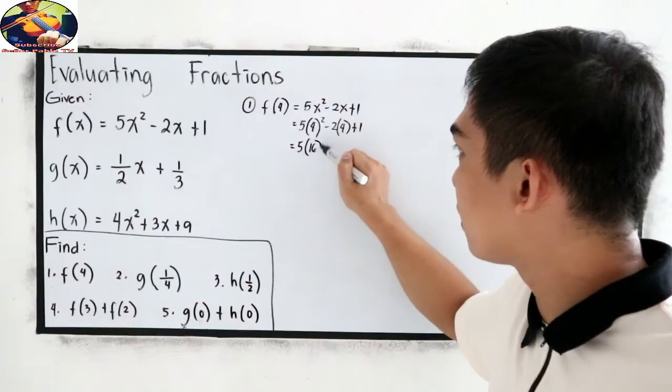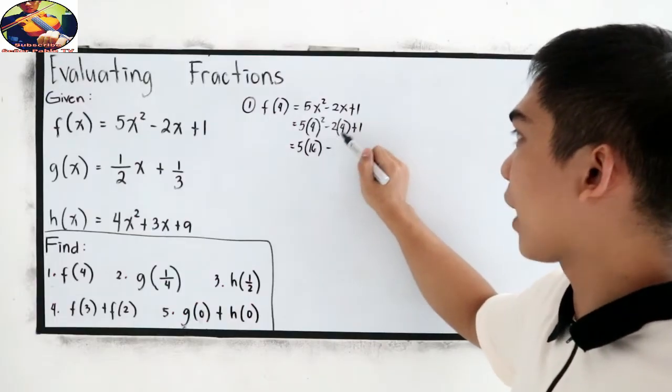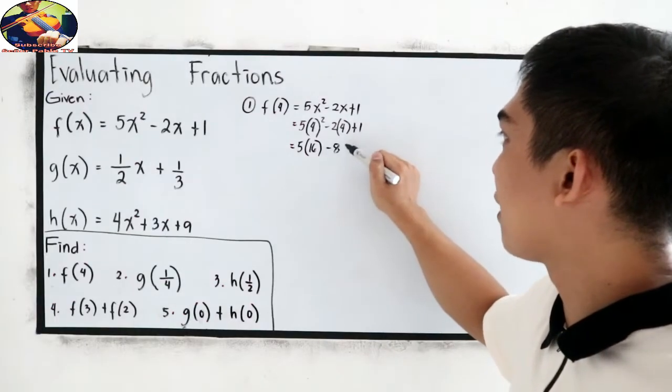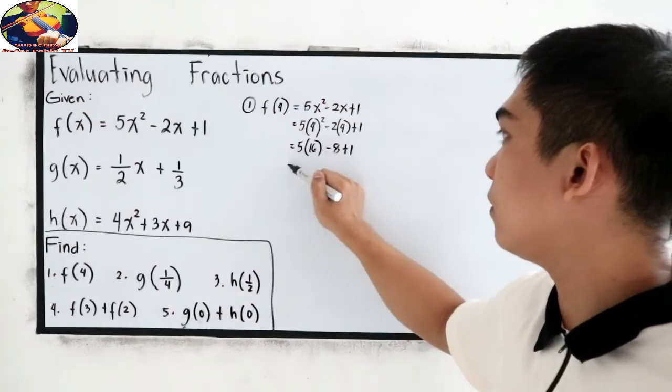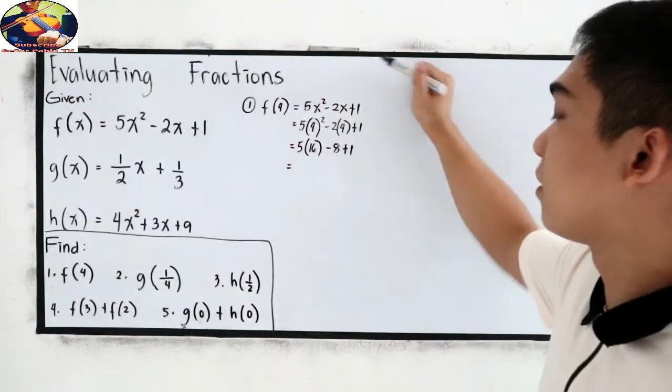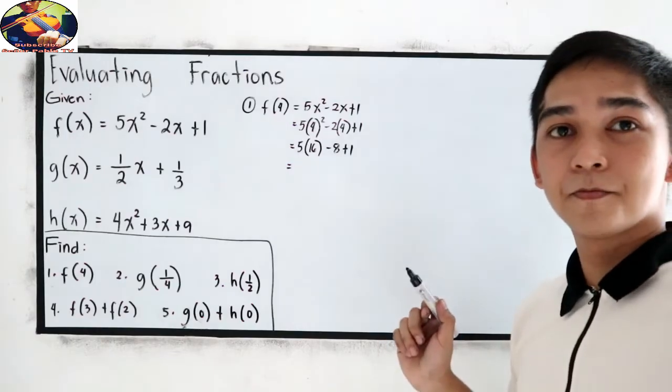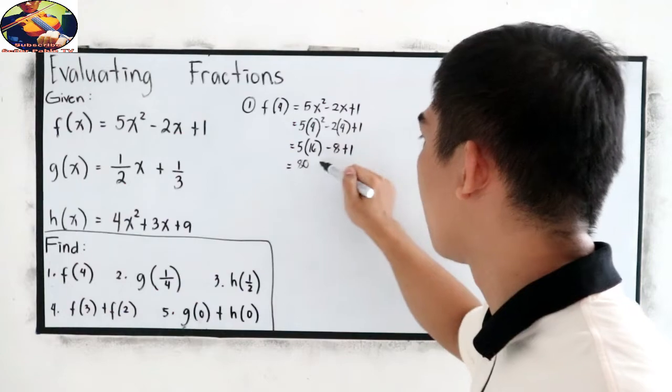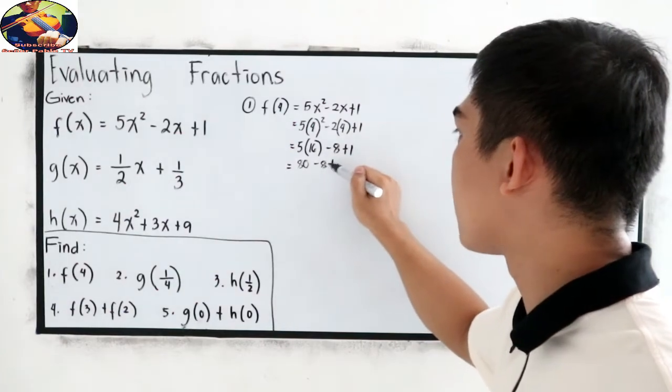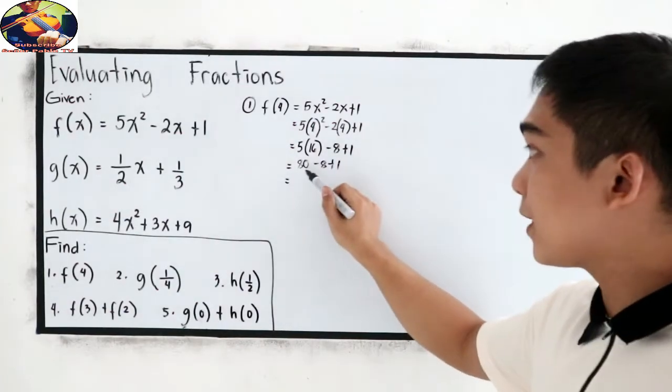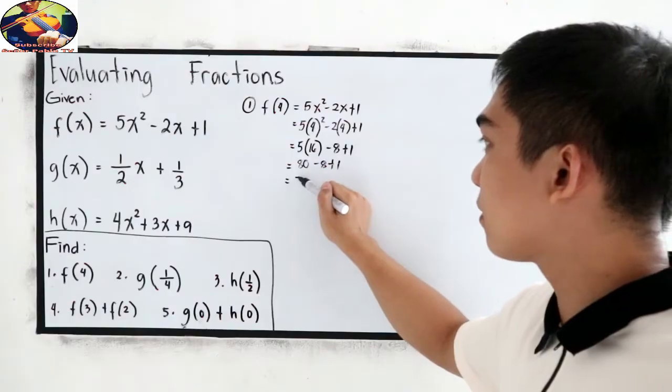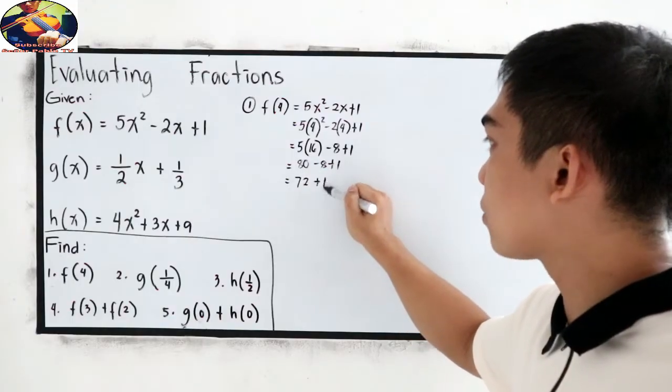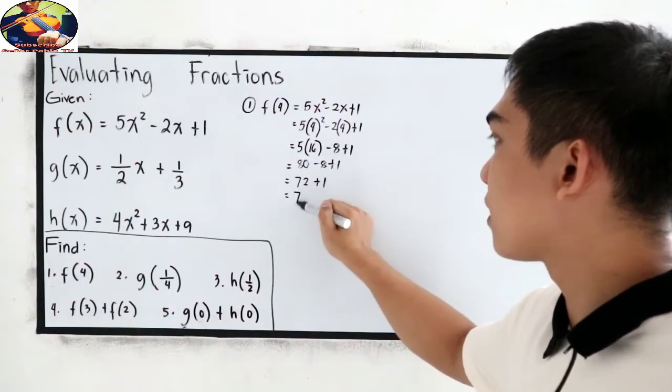5 times 4 squared, this is 16, minus 2 times 4, which is 8 plus 1. 5 times 16, so that is 80, minus 8 plus 1. 80 minus 8, that is 72 plus 1, gives us 73.